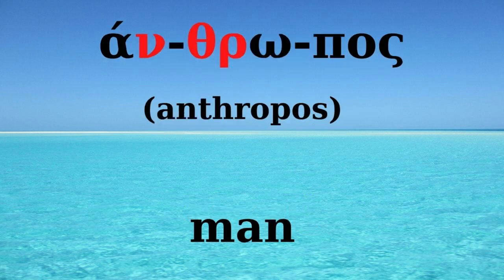Let's see another example: 'άνθρωπος' (anthropos, human). We divide the three consonants so that 'ν' goes with the first vowel, giving 'αν-θρω', because there is no Greek word that begins with the consonants νθ together.